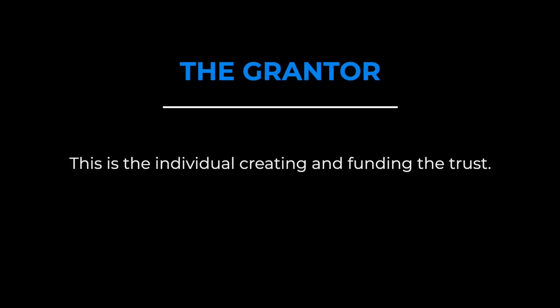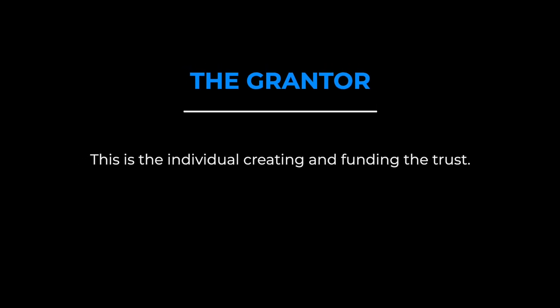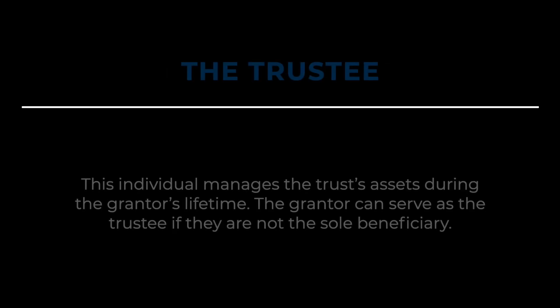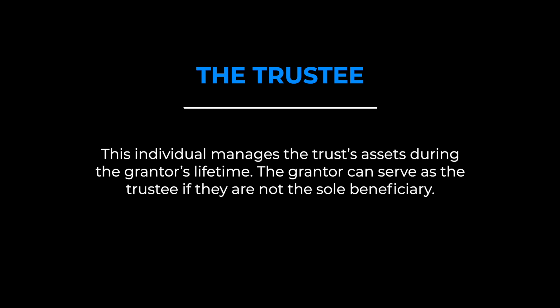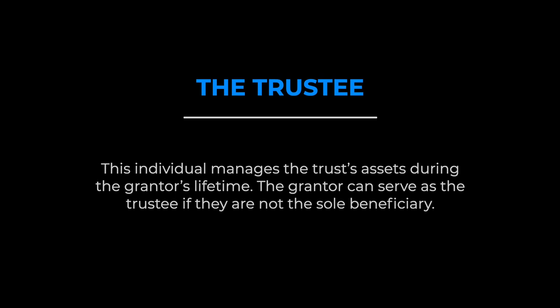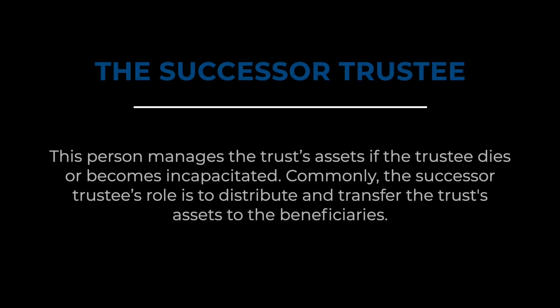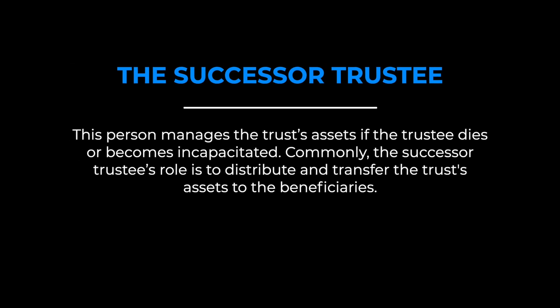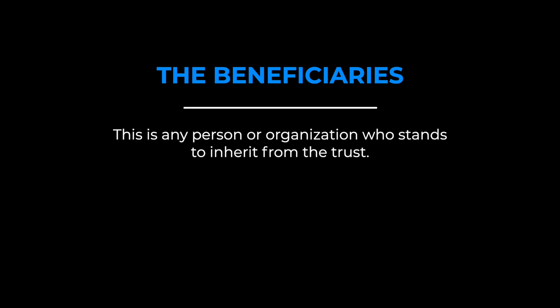We'll start by defining a few key roles. First, there's the grantor — the individual creating and funding the trust. Next, the trustee, who manages the trust assets during the grantor's lifetime. The grantor can serve as the trustee if they are not the sole beneficiary. Third, the successor trustee manages the trust assets if the trustee dies or becomes incapacitated, and commonly distributes and transfers the trust assets to the beneficiaries. Finally, the beneficiaries — any person or organization who stands to inherit from the trust.